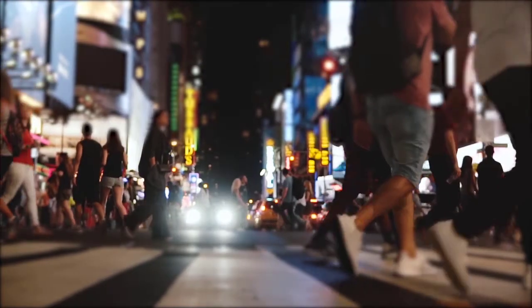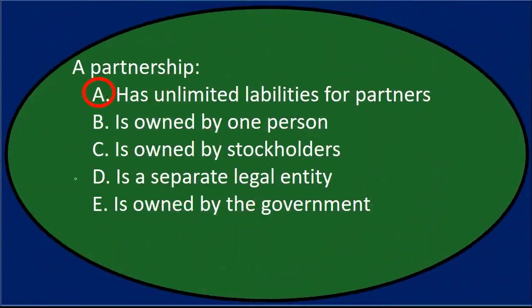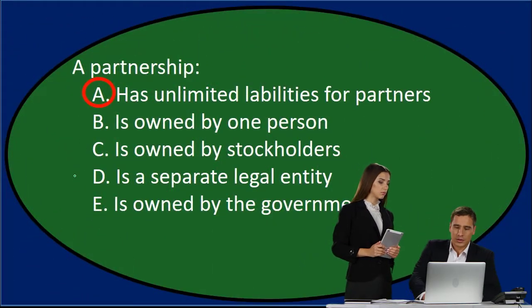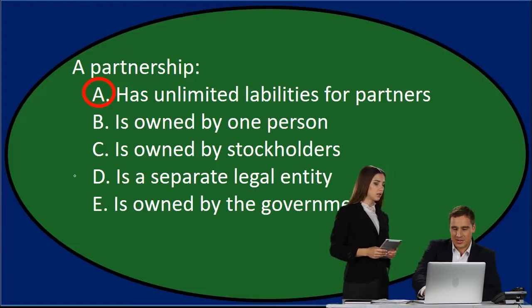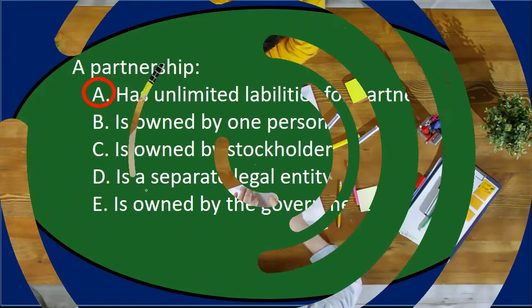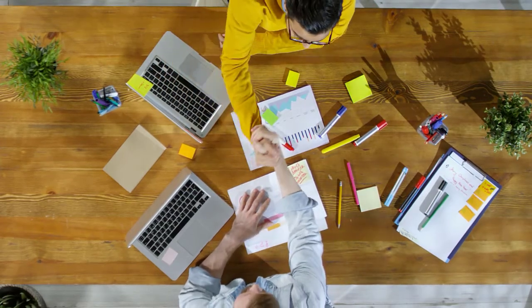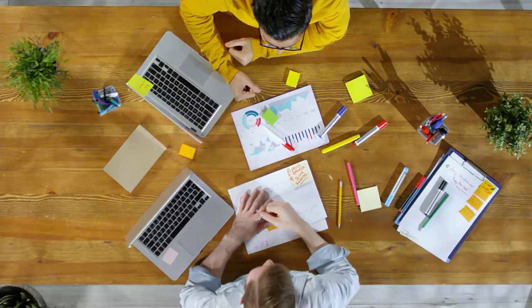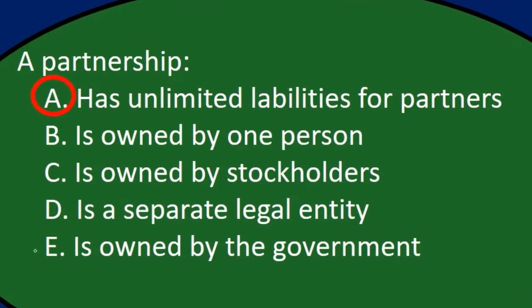C — owned by stockholders — would be a corporation, not a partnership. D — a separate legal entity — is not correct for a partnership. Note that we do have a separate entity concept in accounting, meaning we keep the partnership books separate from the individual's books, but that's not the same as being a separate legal entity. A separate legal entity is almost like an abstract person with rights to own assets and property — that's not a partnership. E — owned by the government — is also not true.